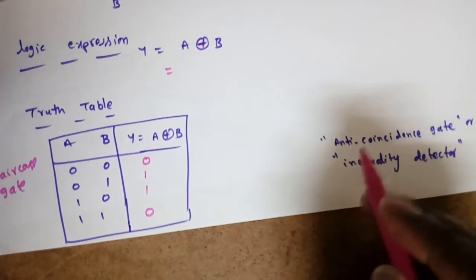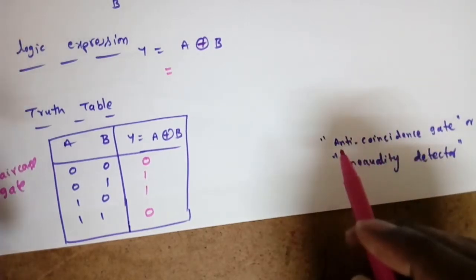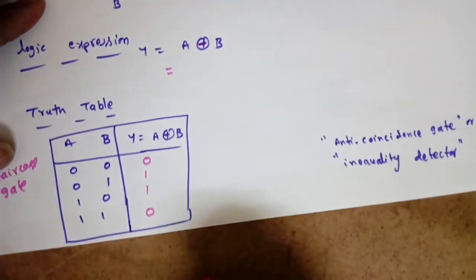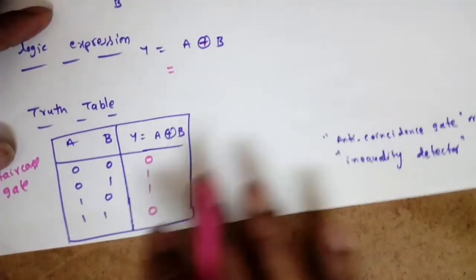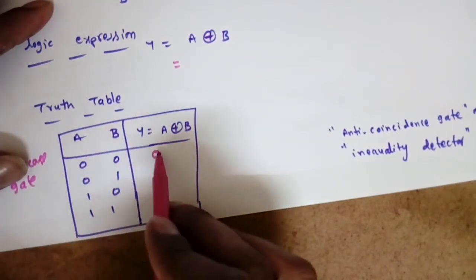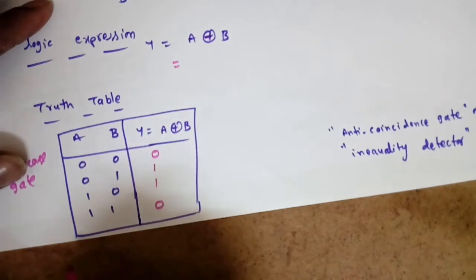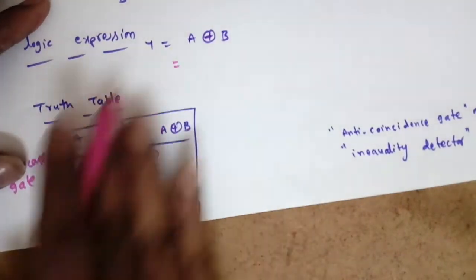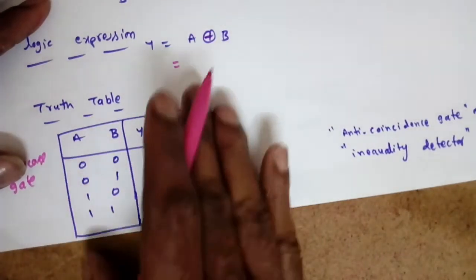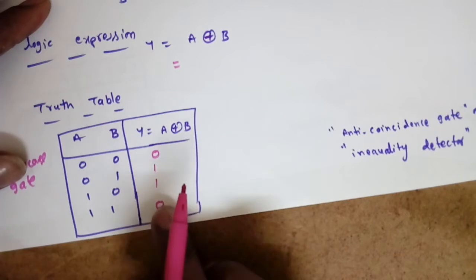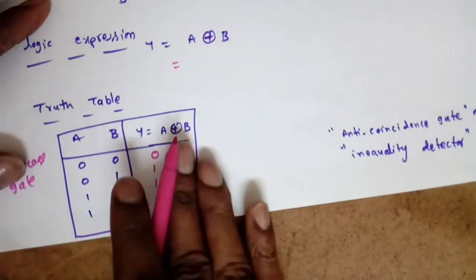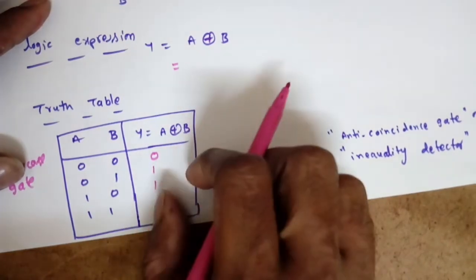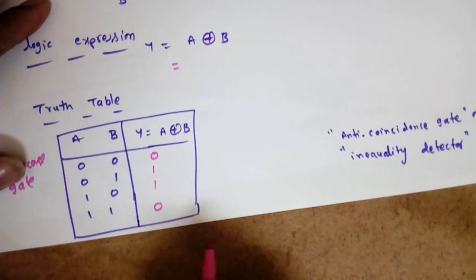The XOR gate is called an inequality detector because wherever inputs are not equal, the output should be high — useful for detecting differences in digital systems. It is also called an arithmetic gate because it performs binary addition: 0+0=0, 0+1=1, 1+0=1, and 1+1 gives sum=0, carry=1. The XOR gives only the sum, which is why it is used in adder circuits.